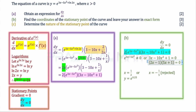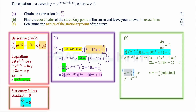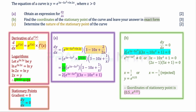Setting each factor to zero gives x equals one half or x equals negative one fifth. Since the question states x must be greater than zero, we reject x equals negative one fifth, leaving x equals one half. Substituting x equals one half into the original equation gives y equals e to the power of one quarter. So the coordinates of the stationary point are (0.5, e to the power of one quarter).